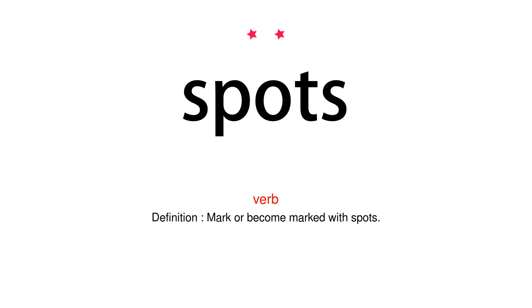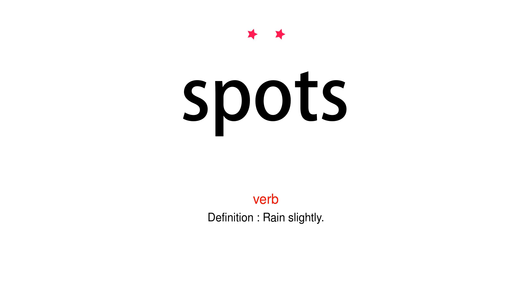Verb. Definition. Mark or become marked with spots. Verb. Definition. Rain slightly.